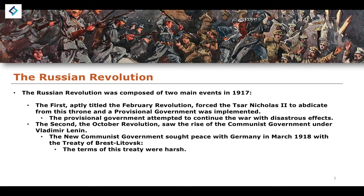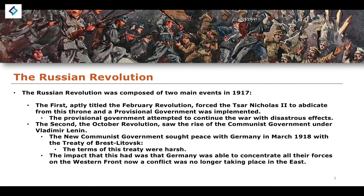The Treaty of Brest-Litovsk was essentially imposed upon the Russian Empire, now the Soviet Union, and its terms were very, very harsh. The impact this had on Germany was that they were able to concentrate all their forces on the Western Front. Rather than fighting a war on two fronts, which they had been doing since the beginning of the conflict, they were now able to transfer all of their Eastern troops over to the West, which would bolster the defences and offensive capabilities of Germany on the Western Front.